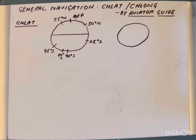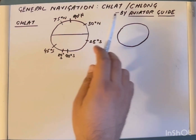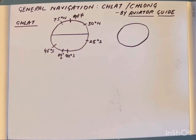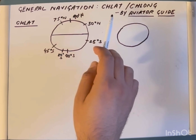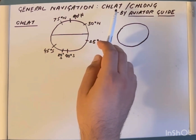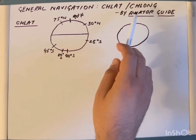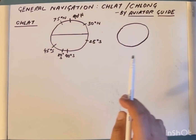Hello guys, welcome to Aviator Guide. Today we are going to study a topic in general navigation. The topic is ch-lat and ch-long. We have already discussed latitudes and longitudes. The difference or change in latitude from one point to another is called ch-lat or d-lat, and the change in longitude from one longitude to another is called ch-long or d-long.